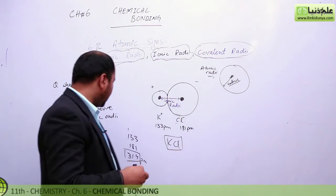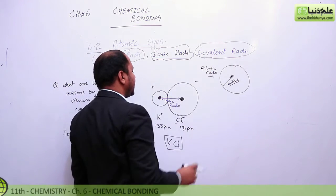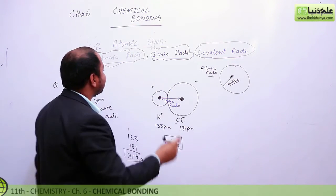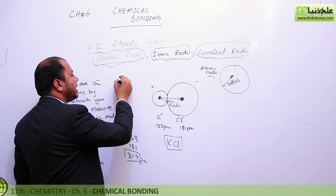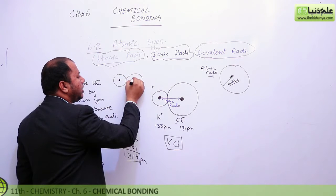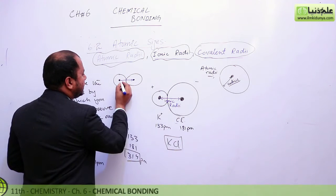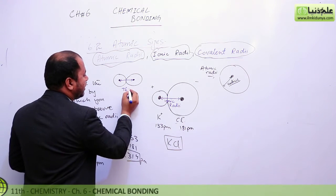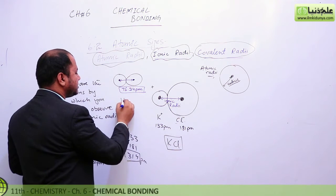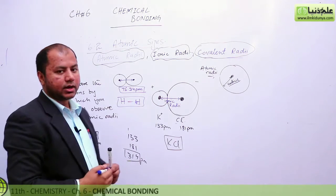Now let's talk about covalent radii. In a previous lecture we talked about hydrogen — two hydrogen atoms which are covalently linked. The distance between those two hydrogen atoms was 75.34 picometers, and that distance is called the covalent radii.